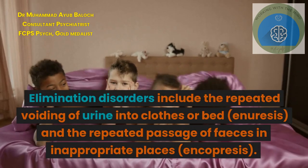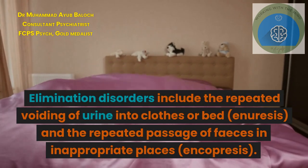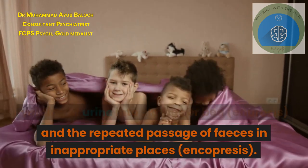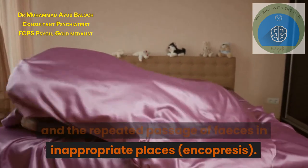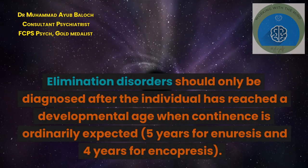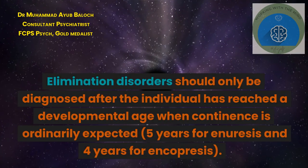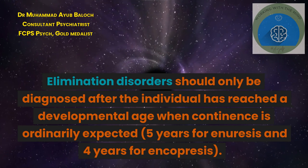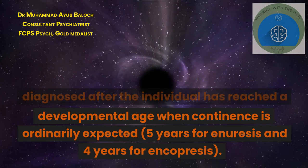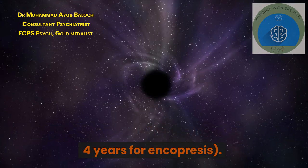Elimination disorders include the repeated voiding of urine into clothes or bed, known as enuresis, and the repeated passage of feces in inappropriate places, known as encopresis. Elimination disorders should only be diagnosed after the individual has reached a developmental age when continence is ordinarily expected: 5 years for enuresis and 4 years for encopresis.